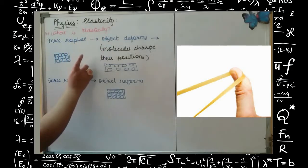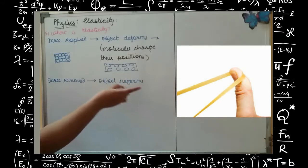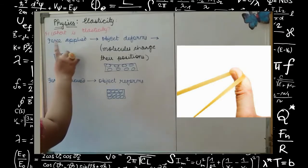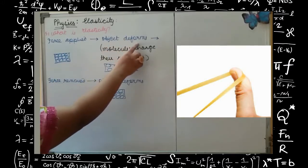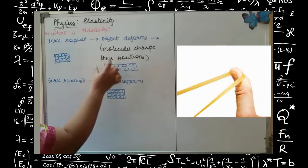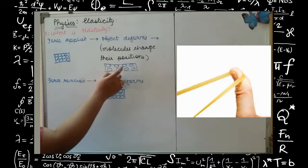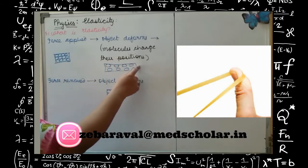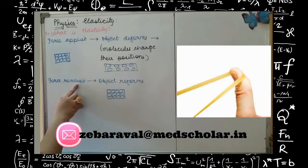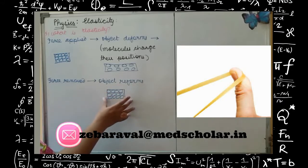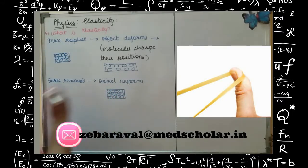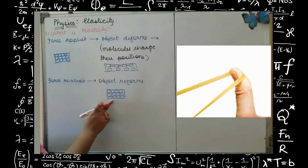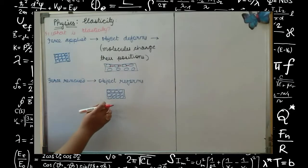What do you mean by elasticity? Basically, the definition is the property by virtue of which material bodies regain their original dimension. Suppose this is an object and when we apply a force to it, the object deforms — its dimensions change. The molecules inside change their positions, but when the external force is removed, the object reforms to its original dimension. The main reason behind this is the intermolecular force between the molecules, which causes the object to regain its original size or dimension.